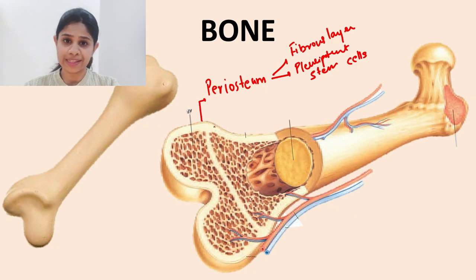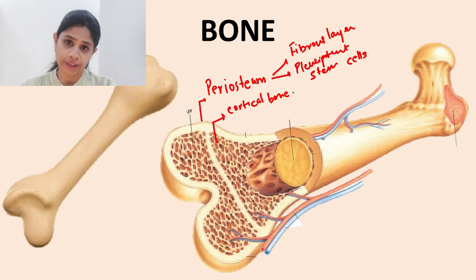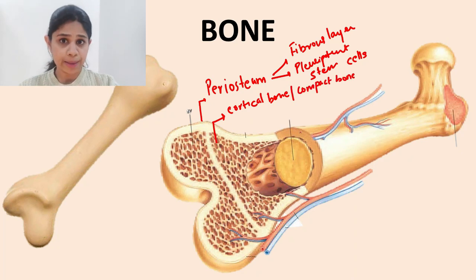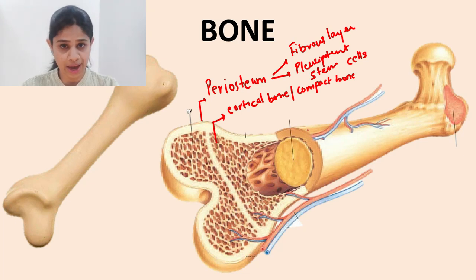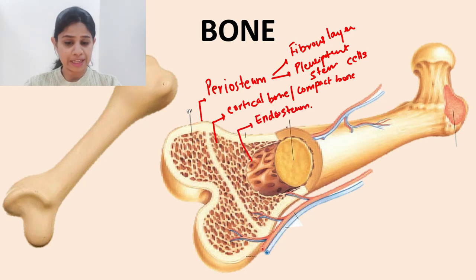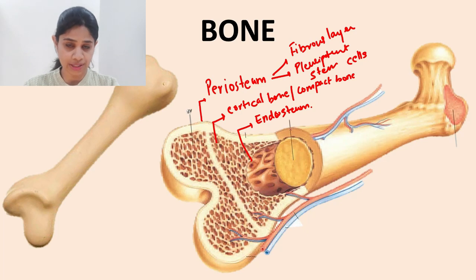The second layer of bone, present right beneath the periosteum, is a layer of cortical bone. Cortical bone is otherwise also called compact bone. This type of bone is very smooth and hard in nature, adding to the structural integrity and resilience of the bone. The third layer is a layer of endosteum, sandwiching the cortical bone between the periosteum and the endosteum.